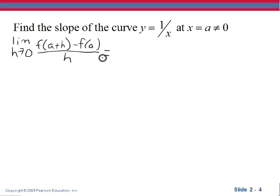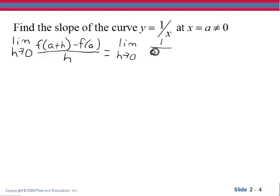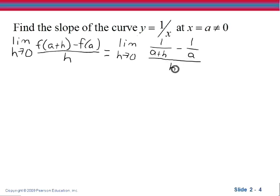Now f(a + h) is what we get when we plug a + h into our function. So that would be the limit as h approaches 0 of 1 divided by (a + h), minus f(a), which is what we get when we plug a in — so that's 1 over a — and this is all over h.